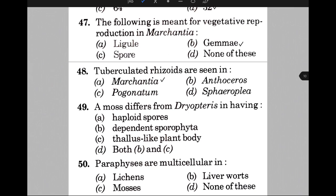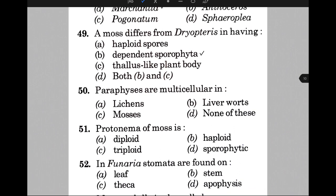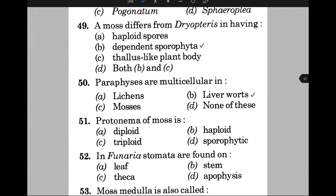A moss differs from pteridophytes in having — the answer is B, that is a dependent sporophyte. Paraphyses are multicellular in — the answer is B, that is liverworts. Protonema of moss is — the answer is option B, that is haploid.